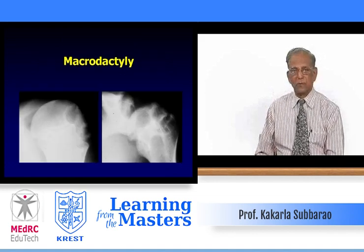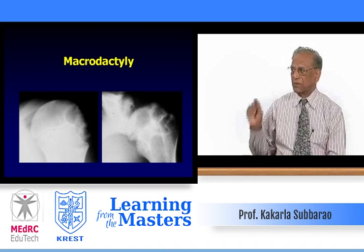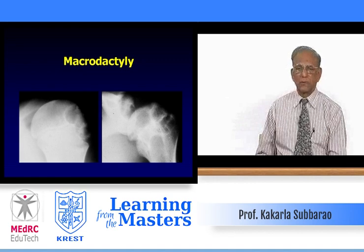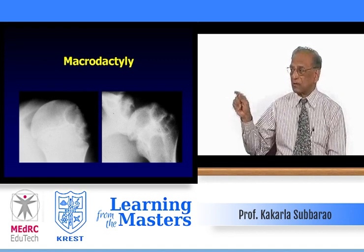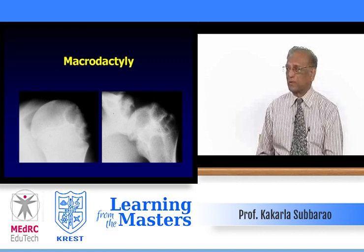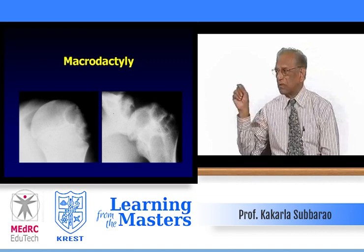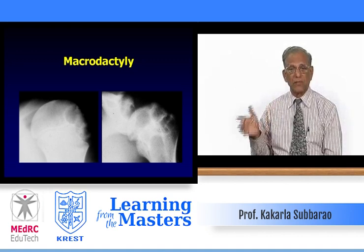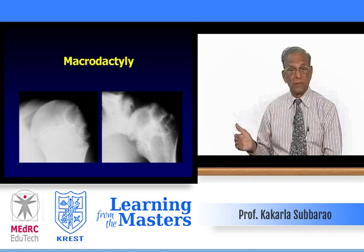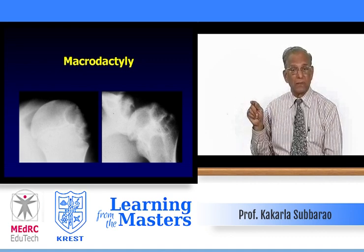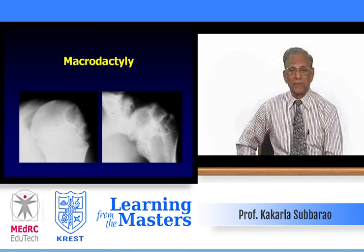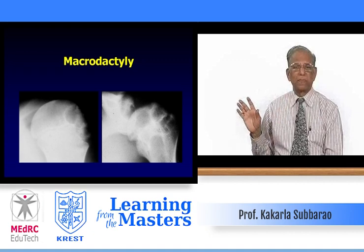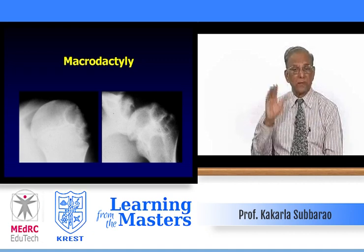Two humeri — on the left side, the epiphyses are just closing; the patient is about 17 years old with a painful shoulder. There is a lytic lesion in the epiphysis and also extending into part of the metaphysis. If you look carefully, there may be some calcifications. This is chondroblastoma — an epiphyseal lesion that sometimes extends to the metaphysis. If there is calcification, it is definitely chondroblastoma; in the absence of calcification, you cannot rule it out.